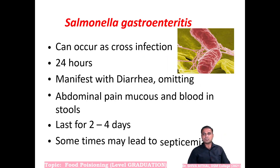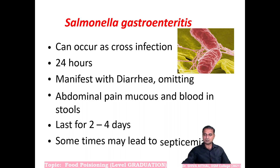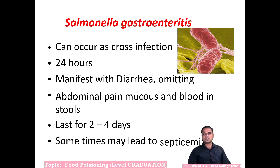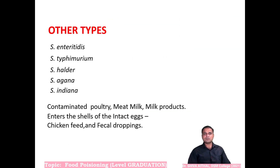Salmonella gastroenteritis is the common bacterium responsible for food poisoning and can cause cross-infection — for example, a contaminated spatula transferring bacteria between containers, or an infected person serving food to healthy people. It can manifest illness within 24 hours, with symptoms of diarrhea, vomiting, and abdominal pain. This can last two to four days and sometimes may lead to septicemia and death.